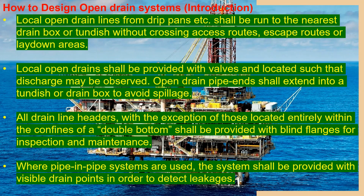Local open drain lines from drip pans, etc., shall be run to the nearest drain box or header without closing access, escape routes, or lay-down areas. Local open drains shall be provided with valves and located such that the discharge will be observed.